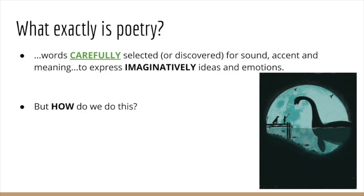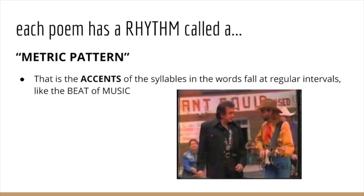Imagine going to a river to look for gold. You'd have to sift through countless rocks and grains of sand in order to find that one piece of gold. With poetry, you need to sift through countless words in order to find the exact word that has the right sound, the right accent, and the right meaning. But how do we do this? Well, to start, each poem has a rhythm called a metric pattern.